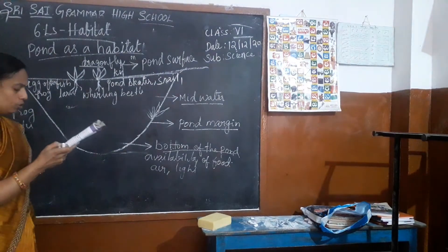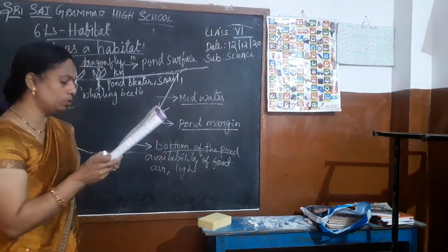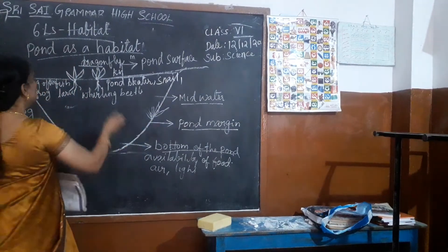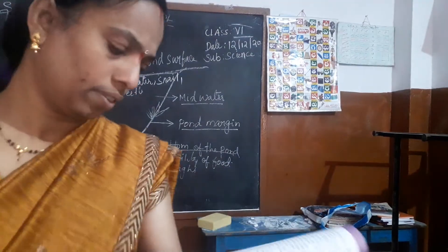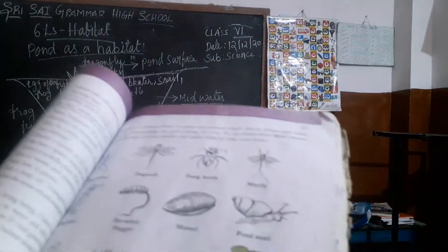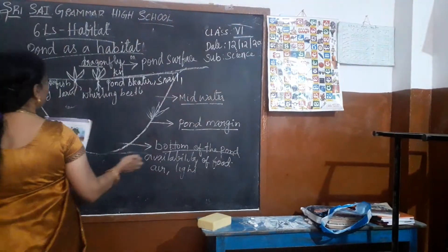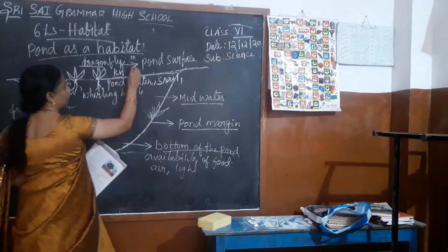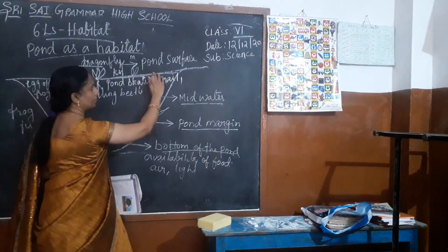Plants like pistia float on the surface completely, while those like the lotus have roots growing underneath. Pistia is a plant — you can see it here — it floats on the surface of the water. The lotus is also present on the surface of the water.